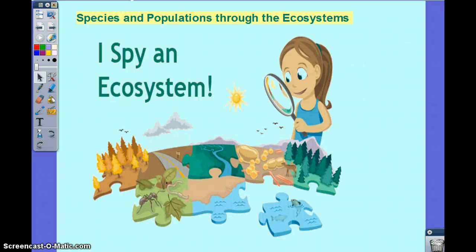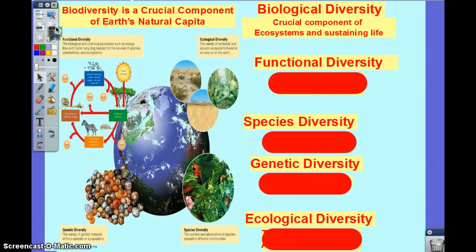We're going to talk about ecosystems again, but this time more about changes in the ecosystem, and those changes are going to stem from populations. Populations are what leads to change, or change in the environment can change a population. It kind of works together — excessive population led to a lot of changes on our planet, and our planet causes changes to populations.